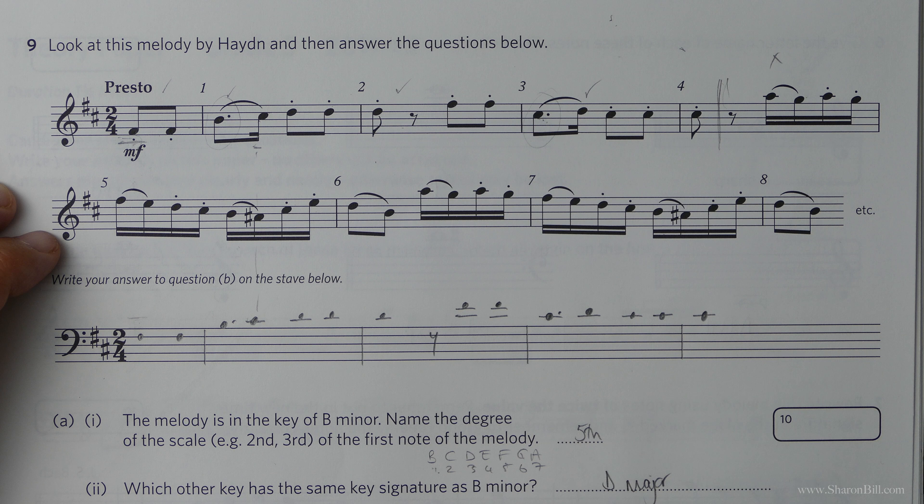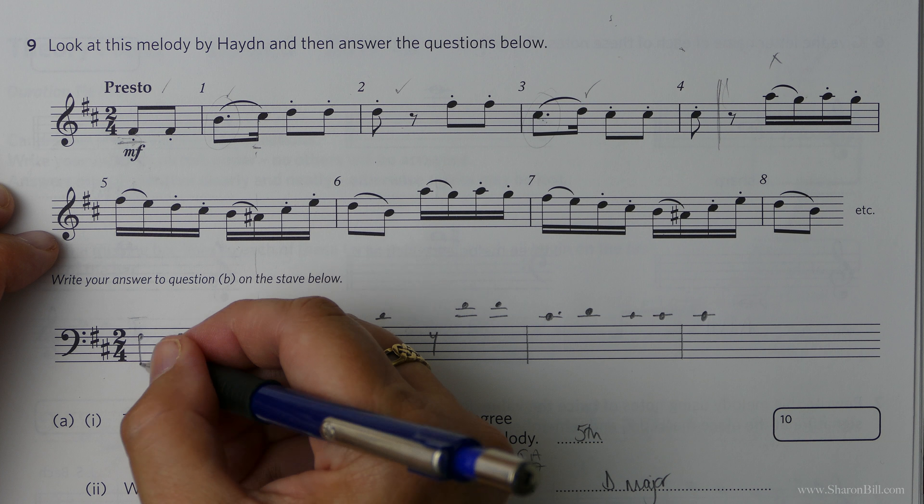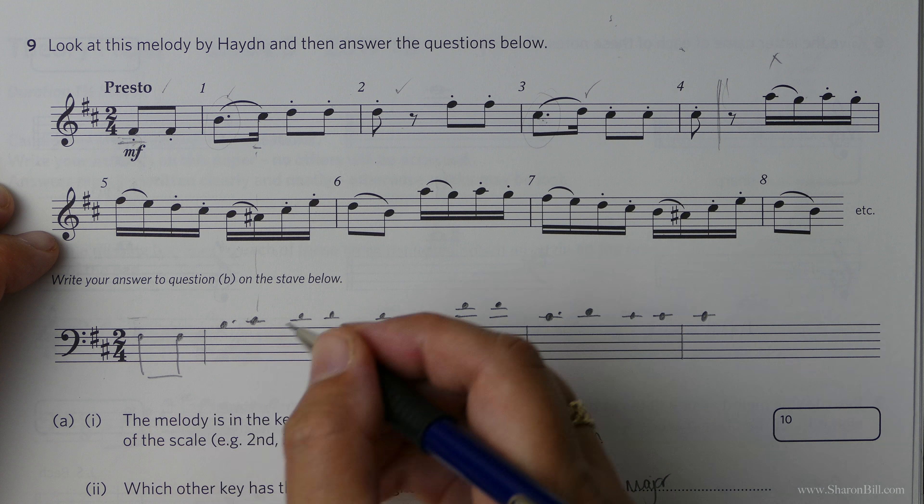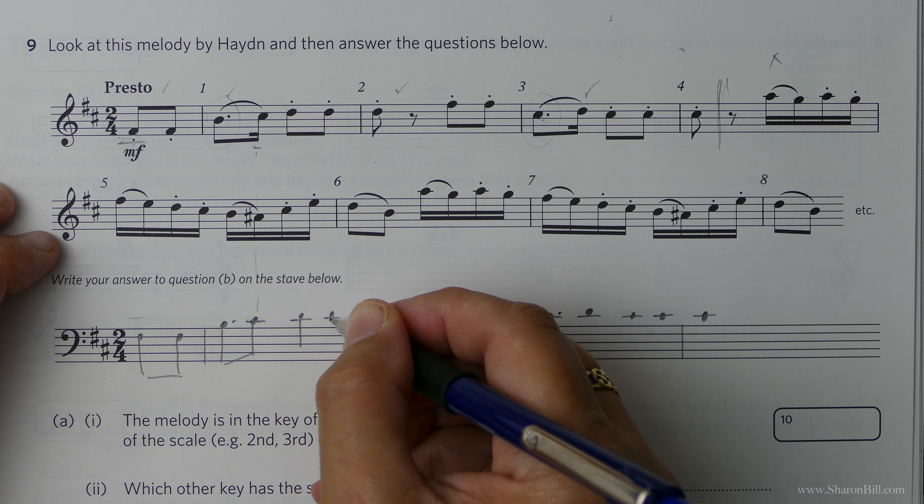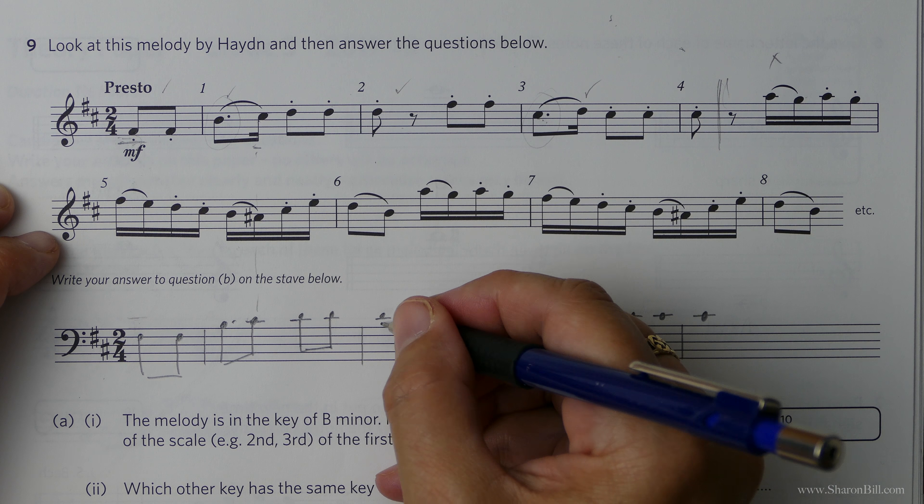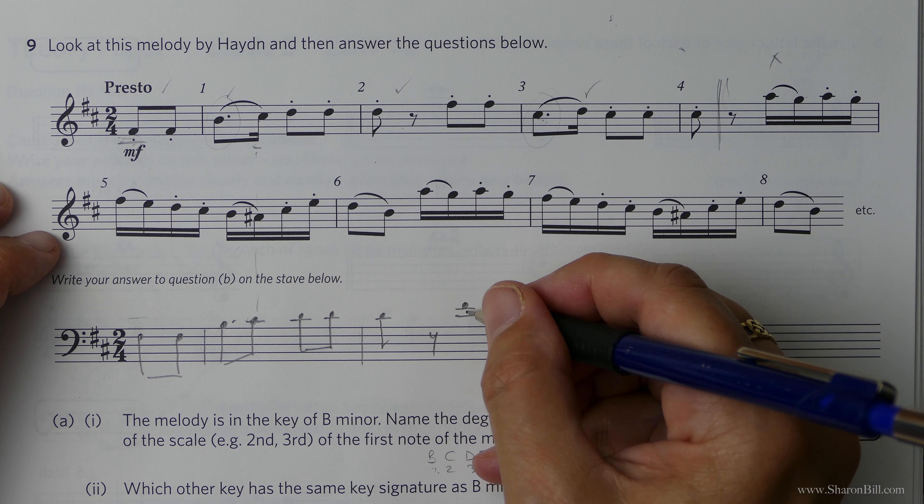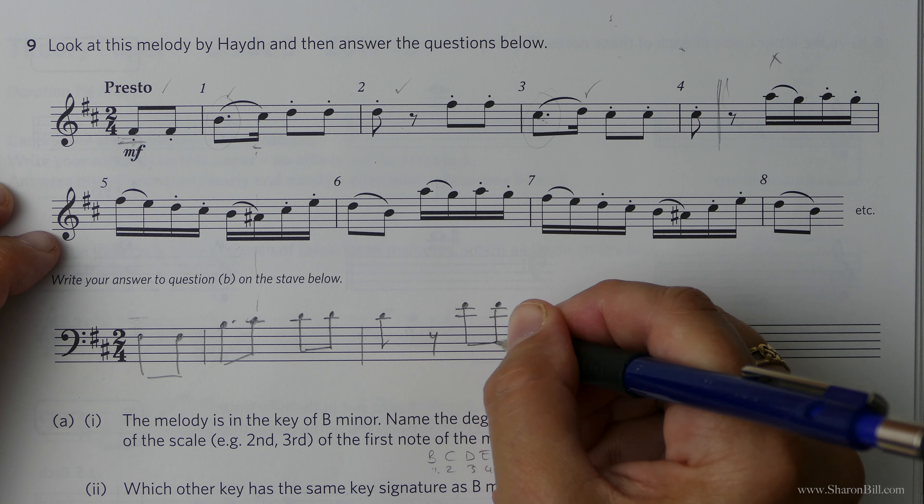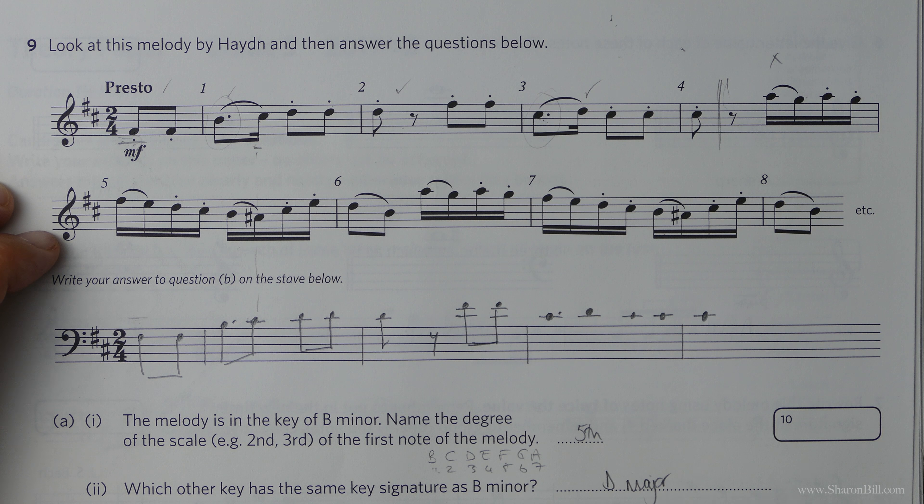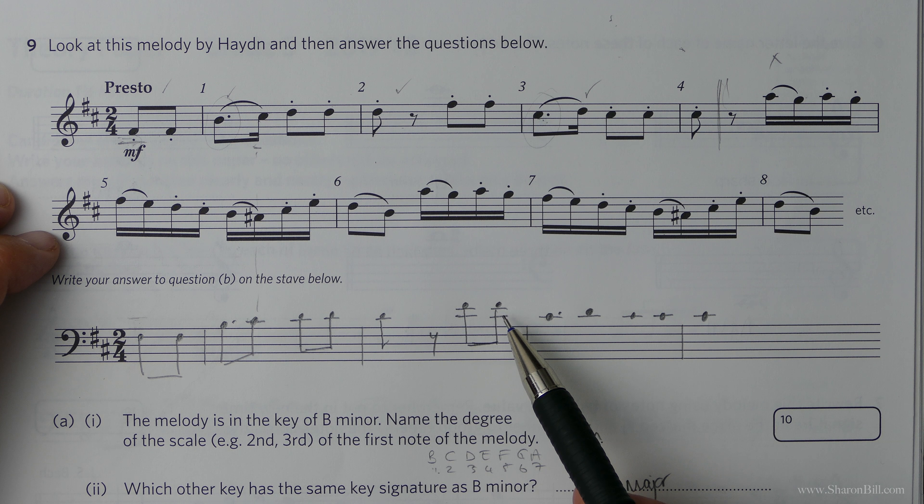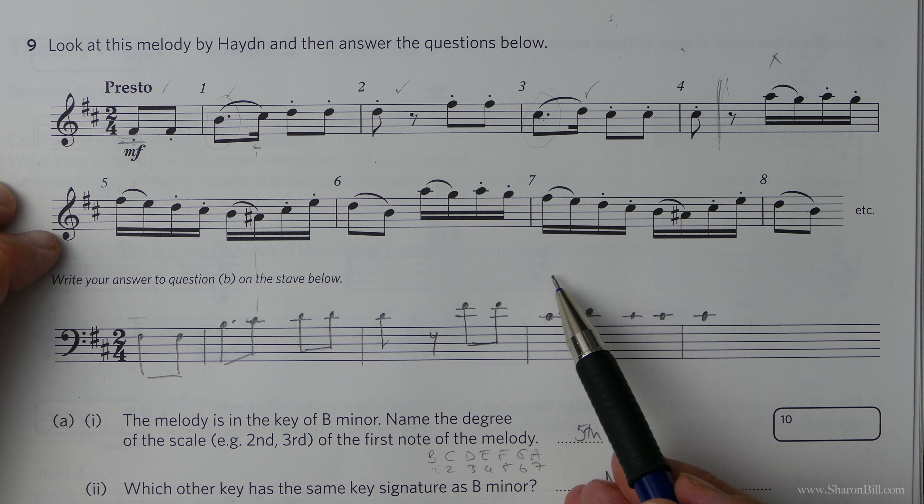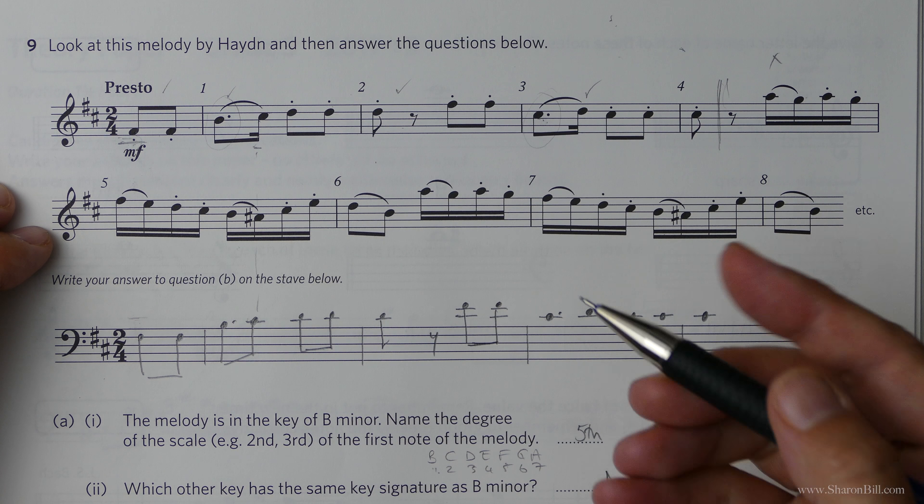That's all that we're required to do. So now I've just got to put the stems in. Beam those. The stems are all going upwards because we're above that middle line for sure. And this shows why we would change the clef. Because if it keeps going higher and higher it's going to get really a silly amount of ledger lines.